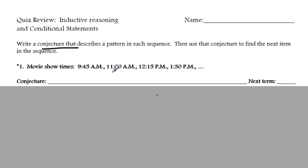We want to write the conjecture that describes the pattern, and then we want to use that conjecture to find the next term in the sequence. So, based on your observations, you can come up with a conjecture. Remember, a conjecture is the pattern that's occurring.